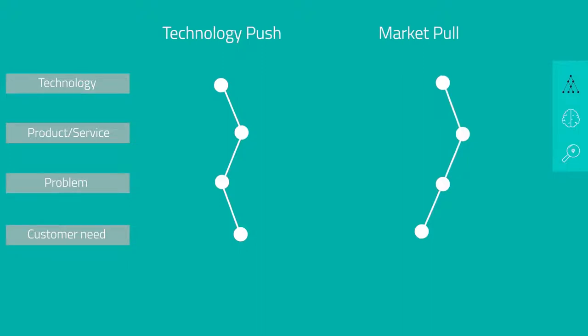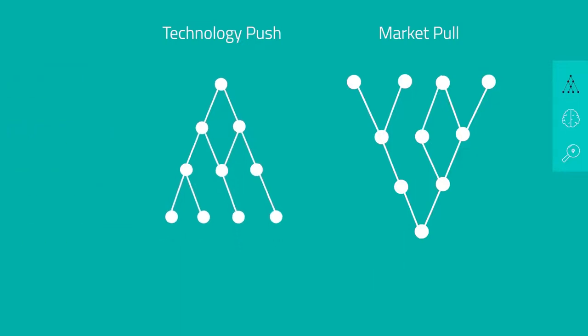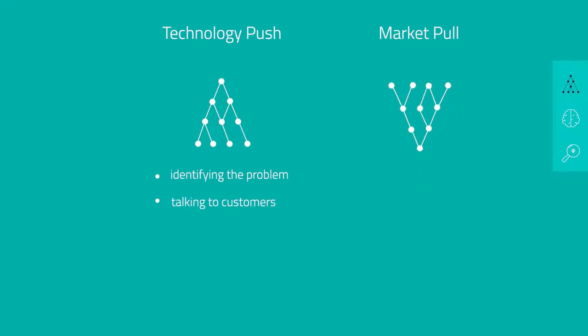Either way, technology push or market pull, a lot of iteration is involved. In the technology push situation, we'll have to iterate on identifying the problem and talking to a lot of customers. In the market pull, the iterations will happen in most cases in prototyping and offering possible technical solutions to customers.